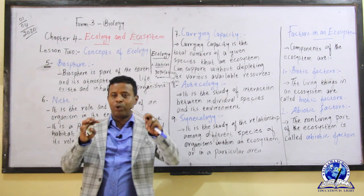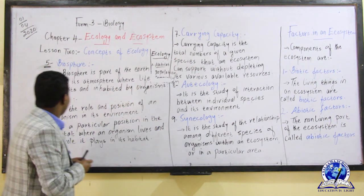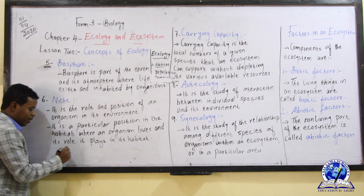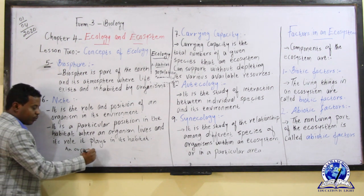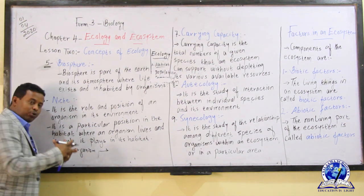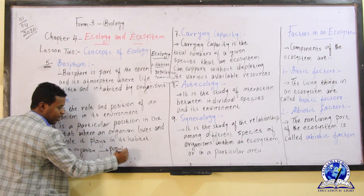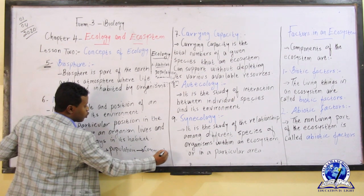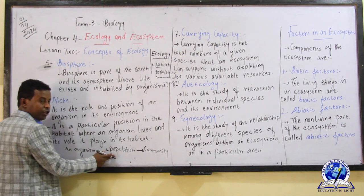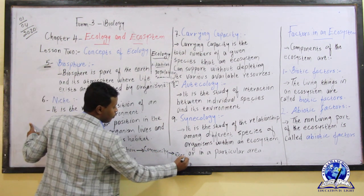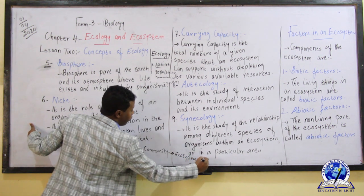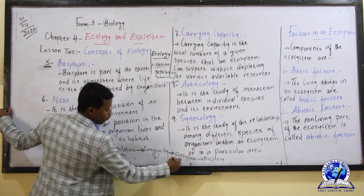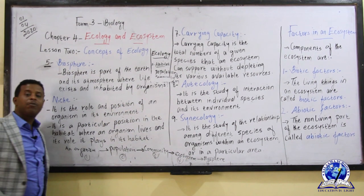Levels of Ecology. Ecology has 5 levels: one — organism, two — population, three — community, four — ecosystem, five — biosphere. There are 5 levels of ecology.